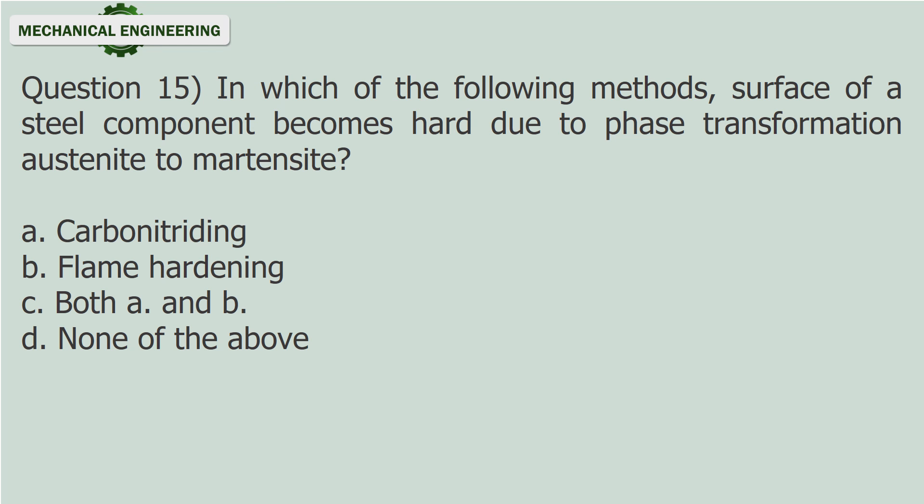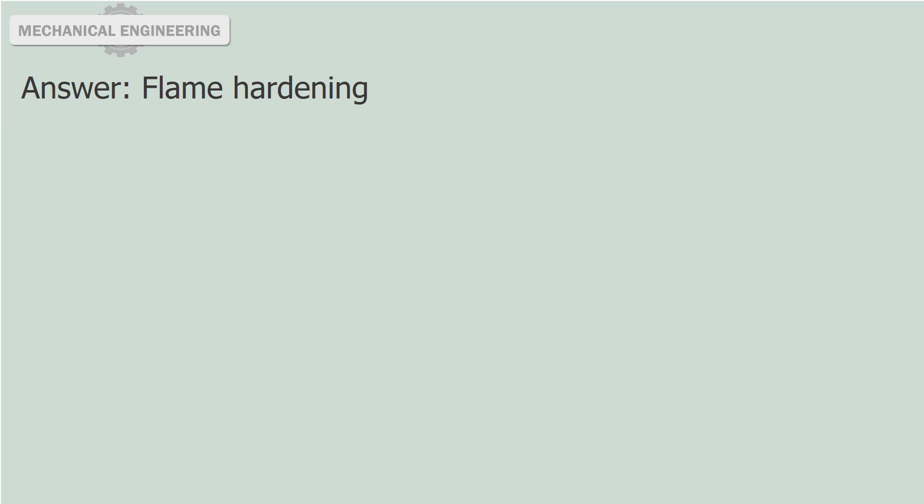Question 15: In which of the following methods does the surface of a steel component become hard due to phase transformation — austenite to martensite? A. Carbonitriding. B. Flame Hardening. C. Both A and B. D. None of the above. Answer: Flame Hardening.